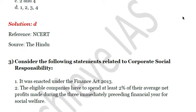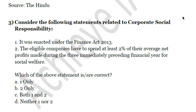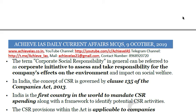Next, consider the following statements related to Corporate Social Responsibility. First, it was enacted under the Finance Act 2013. Second, eligible companies have to spend at least two percent of their average net profits made during the three immediately preceding financial years for social welfare. Only the second statement is correct — it is enacted under the Companies Act 2013, not the Finance Act 2013. The answer is B.